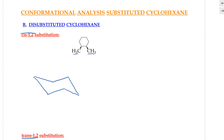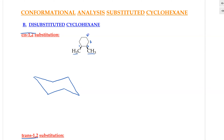Now we have a chair. Let's put in the groups — first label the carbons: carbon 1, 2, 3, 4, 5, and 6. It does not matter how you label the numbers because in the end it's all the same thing — they will be different rotations of the same conformation.